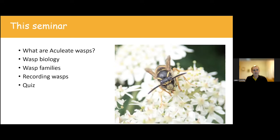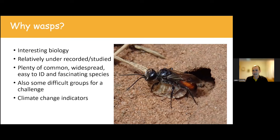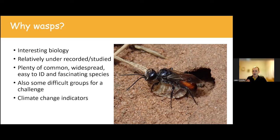So why wasps? Well, wasps are just the best animals — that's a fact. They have really interesting biology. Wasps as a group are essentially taking advantage of other animals: they are predators, parasites, parasitoids, or kleptoparasites, and they've evolved really interesting interactions with other species. They also have really interesting links to their environment — many species are strongly thermophilic, responding to temperature in a profound way. With climate change taking hold, we start to see changes at population and country level, which can be really informative.